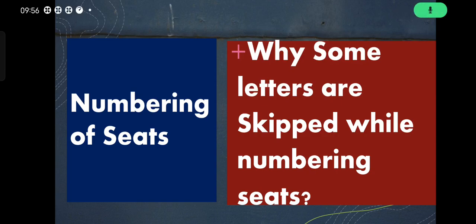Hello friends, in this video I am going to share an interesting fact which I think everyone must know. I have observed that when we travel internationally, the seat numbers on planes or other seating places where seats are to be numbered, the letters I, S, Z etc. are usually not there. Why is it so?